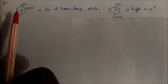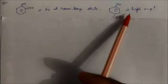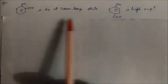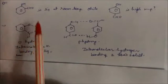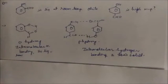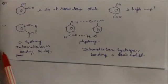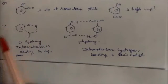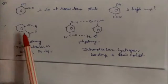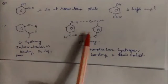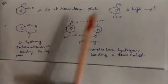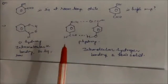ortho-Hydroxybenzaldehyde is a liquid at room temperature, but para-hydroxybenzaldehyde has a high melting point and is solid. In ortho-hydroxybenzaldehyde, intramolecular hydrogen bonding forms between the oxygen and hydrogen within the same molecule, giving it liquid character. In para-hydroxybenzaldehyde, intermolecular hydrogen bonding forms between molecules, making it solid with a high melting point.